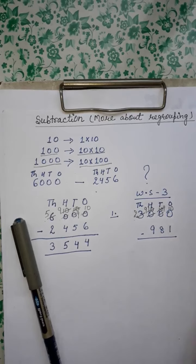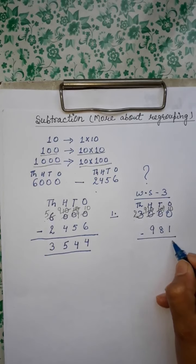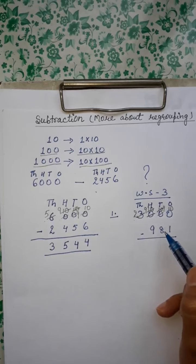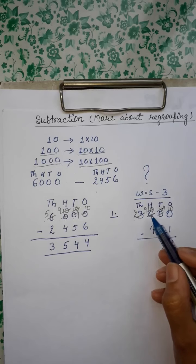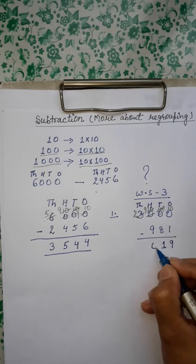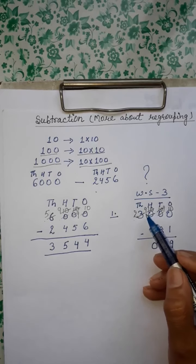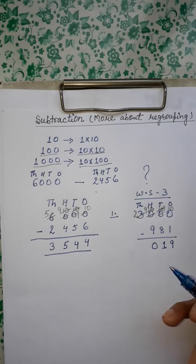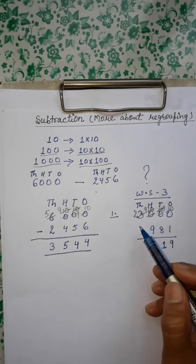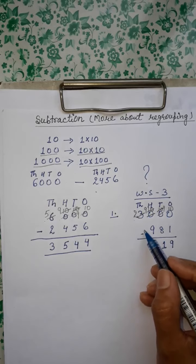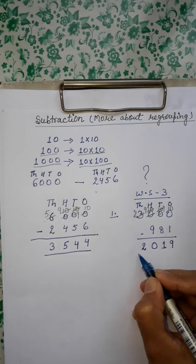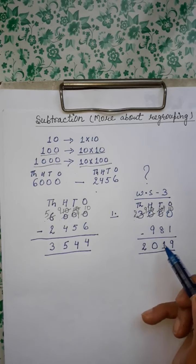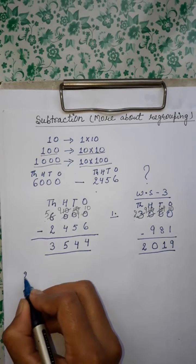Now start our subtraction. When we subtract 1 from 10 we get 9. Like that, when we subtract 8 from 9 we get 1. Again, when we subtract 9 from 9, what we get? Zero. Don't confuse here — aap mein se bahut saare bachche jab aap mujhe feedback bhejte ho toh yahan confused ho jaate ho. Jab hum same digit ko do baar subtract karte hain — jaise ki agar hum 9 mein se 9 ko subtract karenge toh humein kya milega? Zero. Kisi bhi number mein se hum same number ya digit ko subtract karte hain toh we get zero. Then what at thousands place? Two — at thousands place there is nothing written here, so what we write here? Two. Our difference between 3,000 and 981 is 2,019.